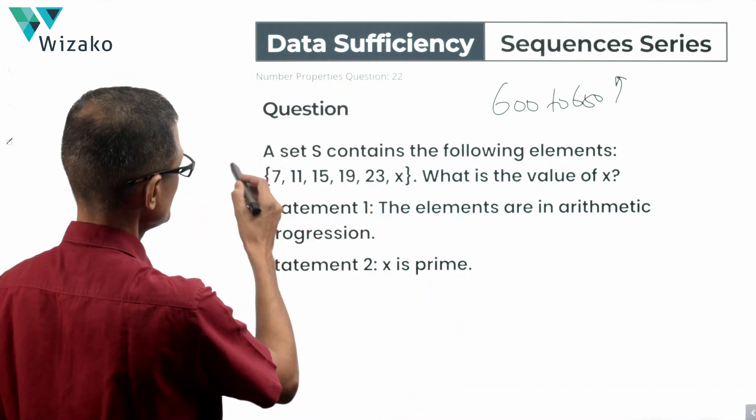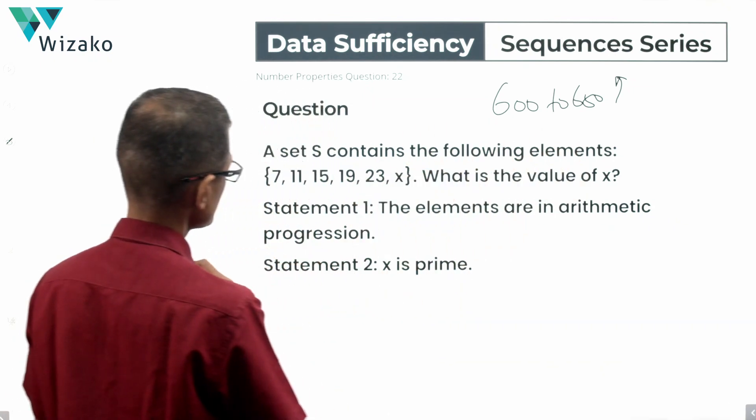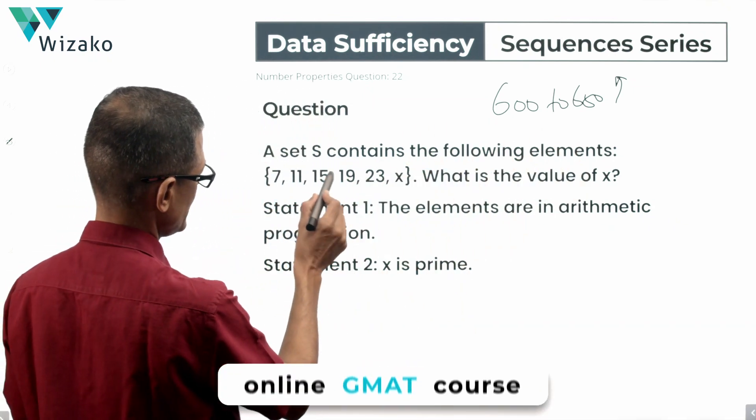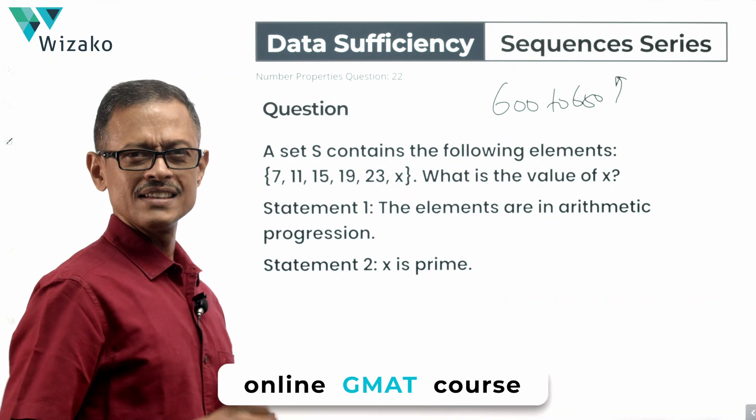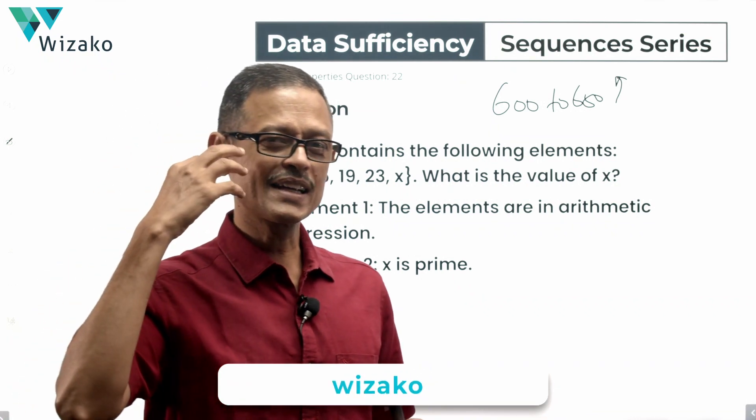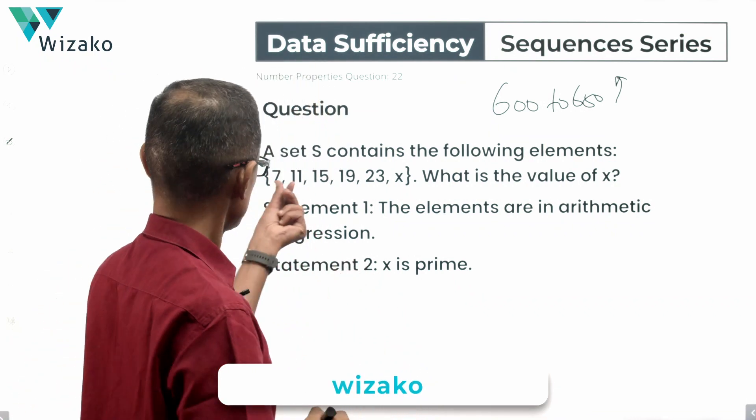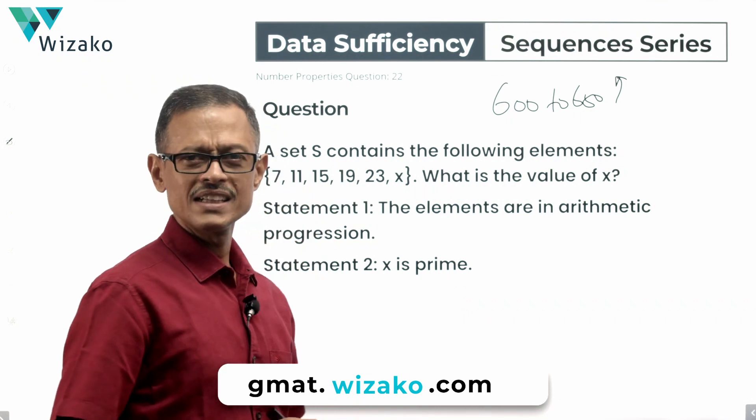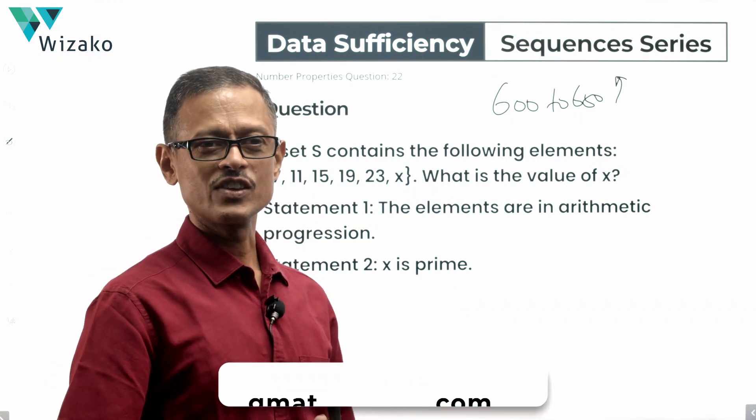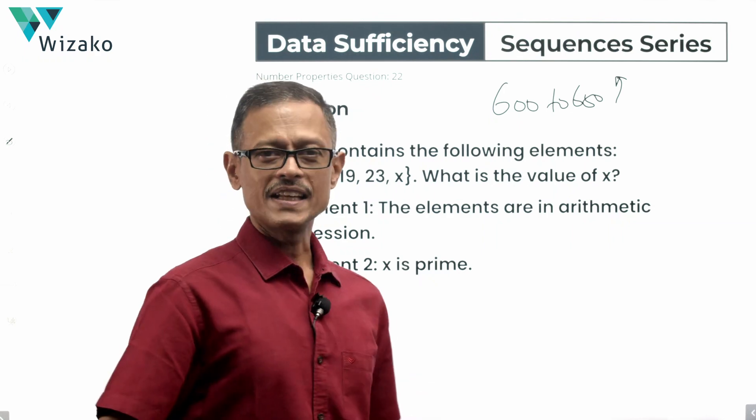Get started with the question. Set S contains the following elements: 7, 11, 15, 19, 23. At this stage what quickly crops up in our mind: 4, 4, 4, 4. This is in an arithmetic progression is what comes to our mind. What if x is 29? What if x is minus 100? What if x is 79?